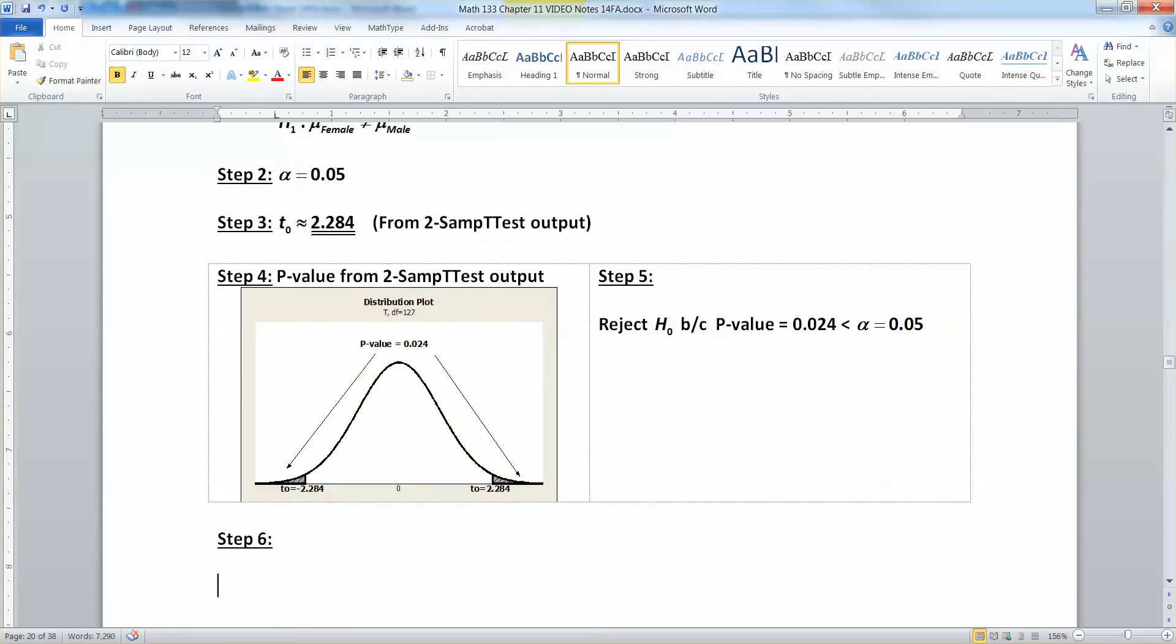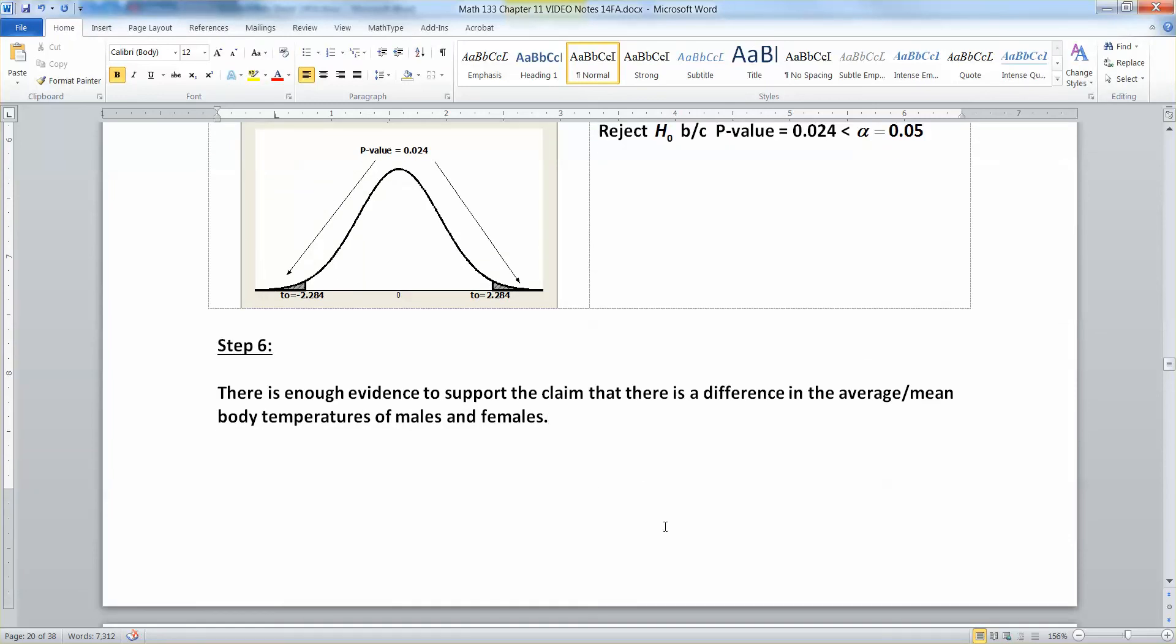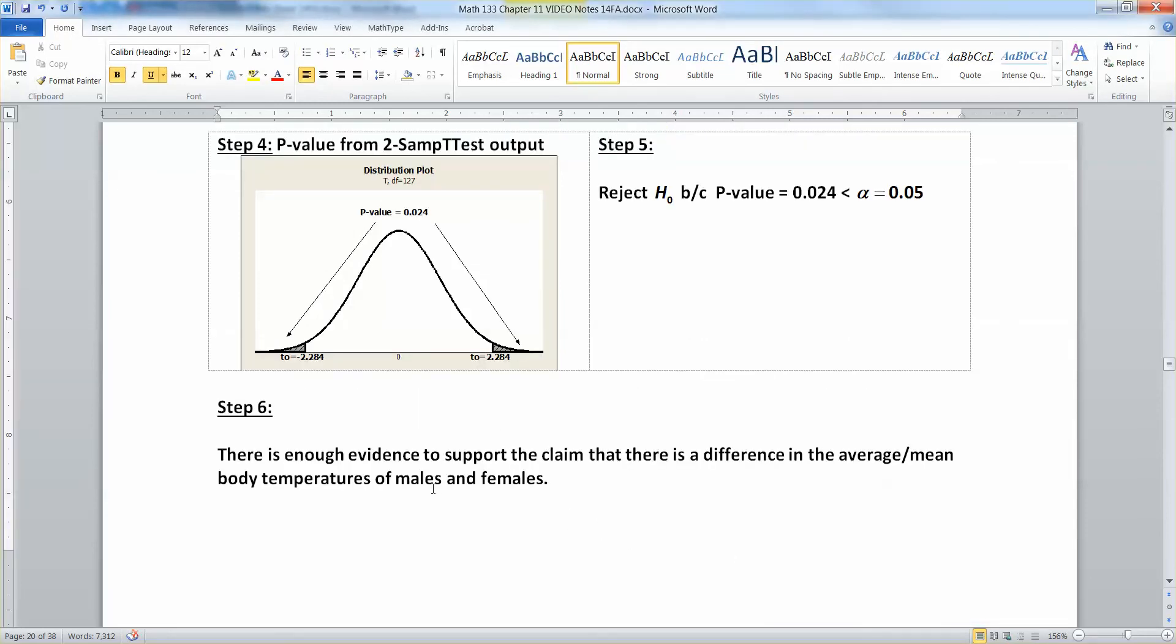Now what's our decision? So since we decided to reject the null hypothesis, that means that our conclusion is going to be to support our alternative hypothesis. There is enough evidence to support the claim that there is a difference in the average/mean body temperatures of males and females. You're not saying who you think is warmer or colder. You're just saying that there's enough evidence to support the claim. Now, it doesn't mean that you're right. There is a chance that you are wrong, but you can't prove it. You can only prove what you have evidence for.